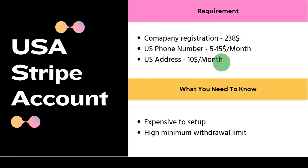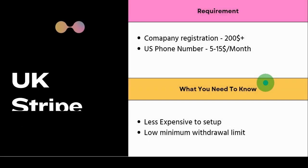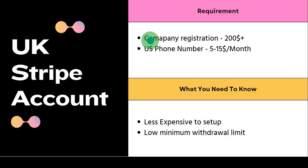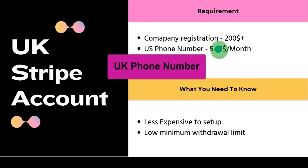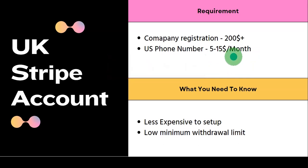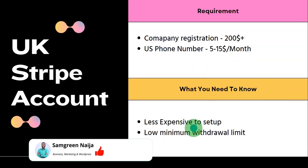If the US option looks expensive and you want a cheaper option, we're going to cover the UK Stripe account. With this, all you need is your company registration, which is about $200. You also need a UK phone number, which is around two to five dollars per month, and I'm going to show you how to get this cheaper along the video.